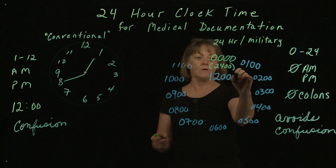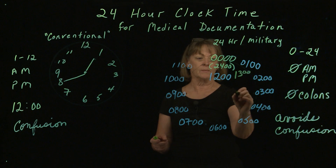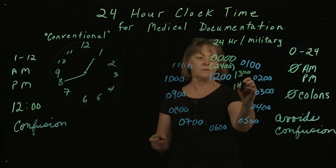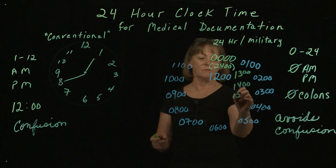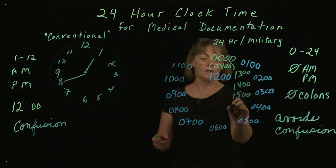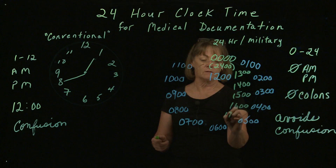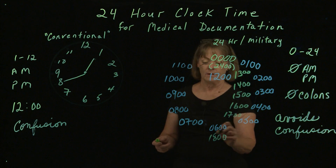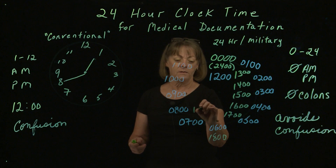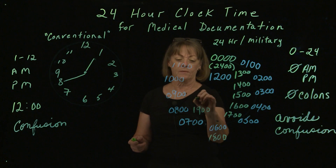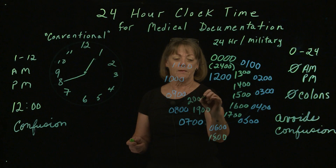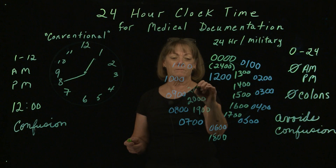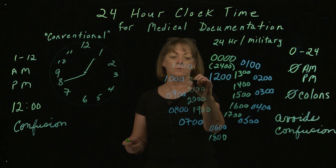Then when you come around to your PM times in the afternoon, you have 1300, 1400, 1500, 1600, 1700, 1800, 1900, 2000, 2100, 2200, and 2300.